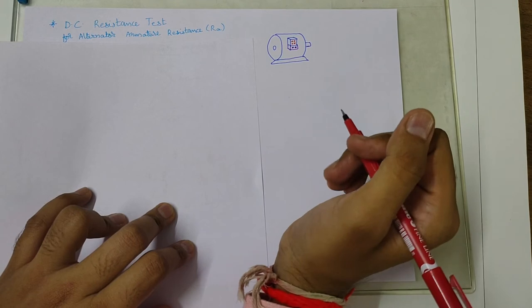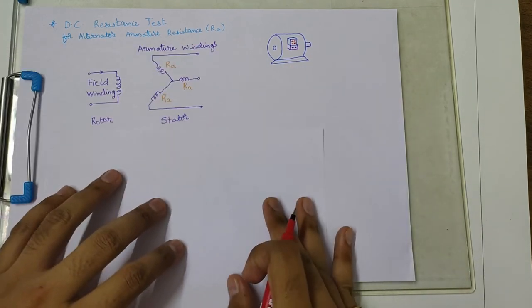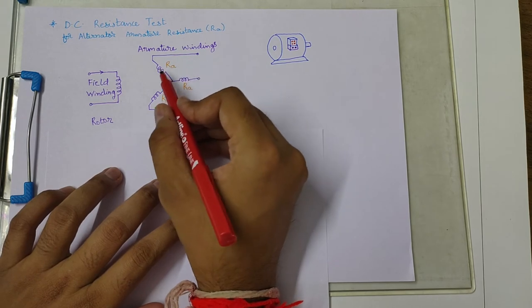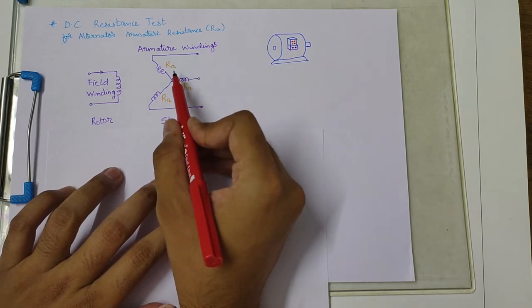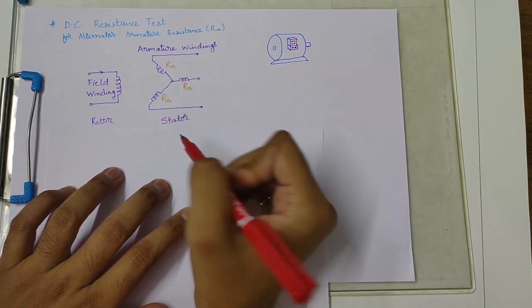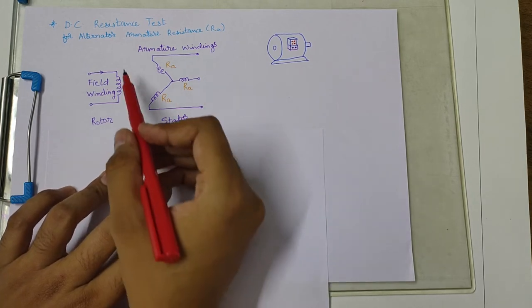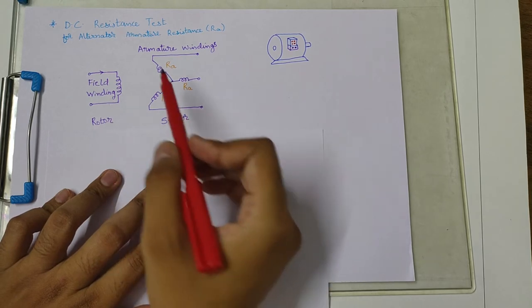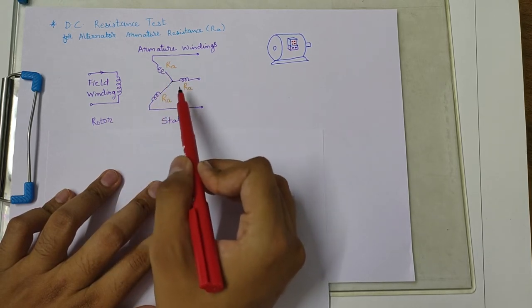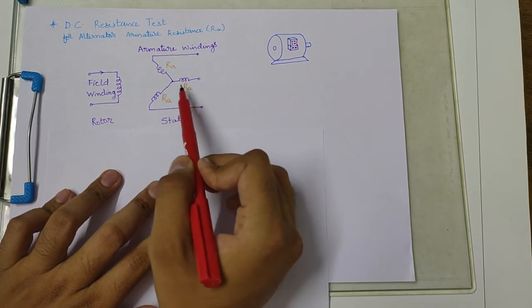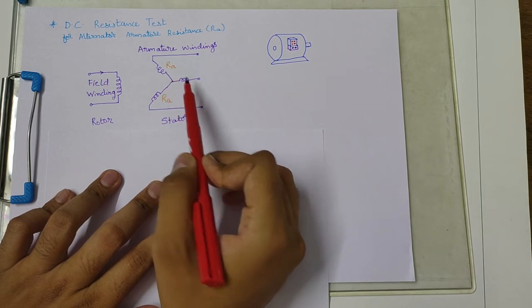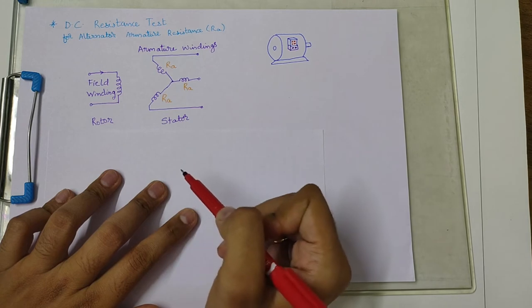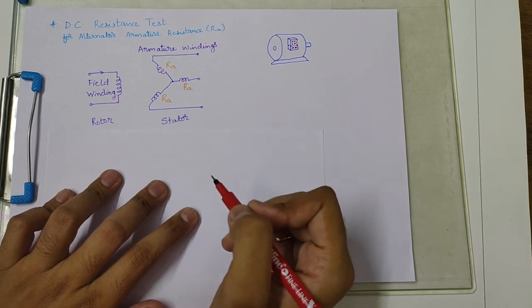So how to measure it? We assume that the three phases have resistances RA, RA, and RA. Now this field winding of the rotor is represented as shown here, and these three phase windings are represented as coils having resistance RA, which is comprising of armature winding on the stator of the motor.